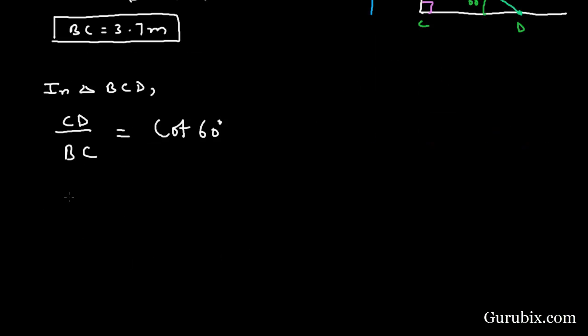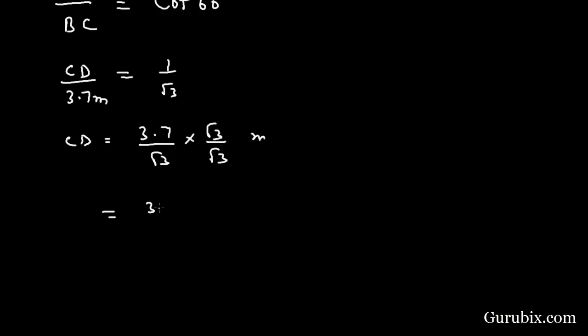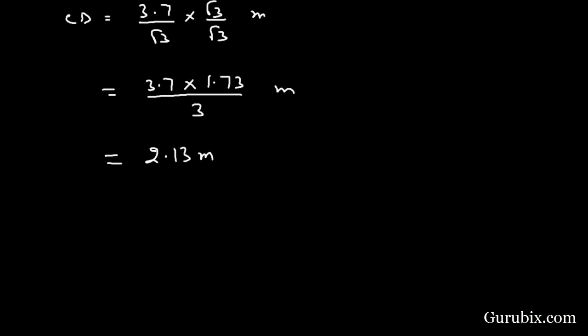We have to calculate CD. BC is given 3.7 meters and cot 60 is 1 over square root of 3. This means CD is equal to 3.7 over square root of 3 meters. We shall rationalize it. Then we have 3.7 and the value of square root of 3 is given 1.73 and the square root of 3 times square root of 3 is equals to 3. Finally, this is equal to 2.13 meters. Therefore, she should place the ladder at a distance of 2.13 meters from the foot of the pole.